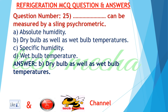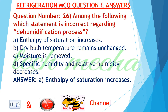Question number 25: What can be measured by a sling psychrometer? A. absolute humidity, B. dry bulb as well as wet bulb temperatures, C. specific humidity, D. wet bulb temperature. Answer: B. dry bulb as well as wet bulb temperatures.